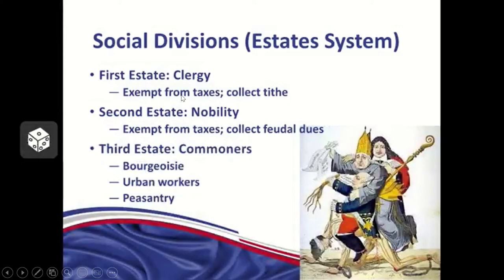The clergy controlled between 10% and 15% of the total land in France, yet they were exempt from taxes. They also had the right to collect taxes of their own — the tithe, or religious taxes. Everyone in French society had to pay a portion of their income to the church by law. It was a mandatory tax to the Catholic church so it could maintain its properties and pay all of its priests and religious officials.